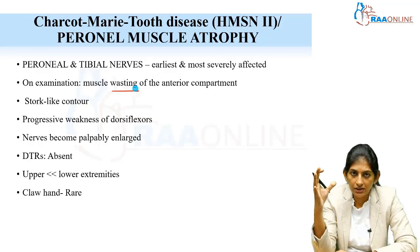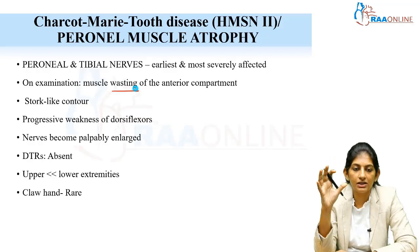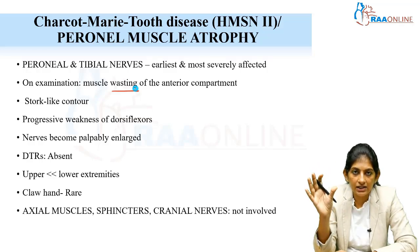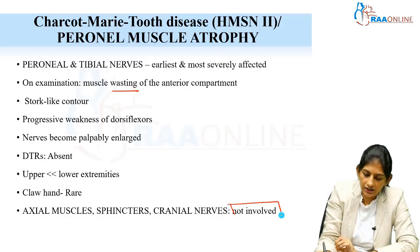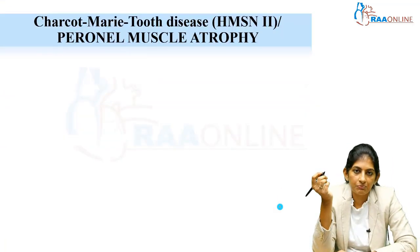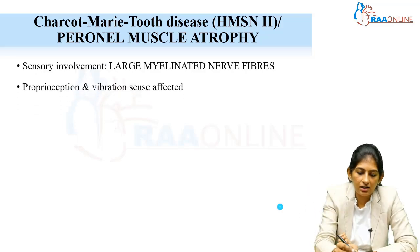In neuropathy, only the distal muscles are involved. If the intrinsic muscles of the hand are involved, there will be claw hand. The axial muscles, cranial nerves, and sphincters are all not involved in Charcot-Marie-Tooth disease. There can be sensory involvement as well.